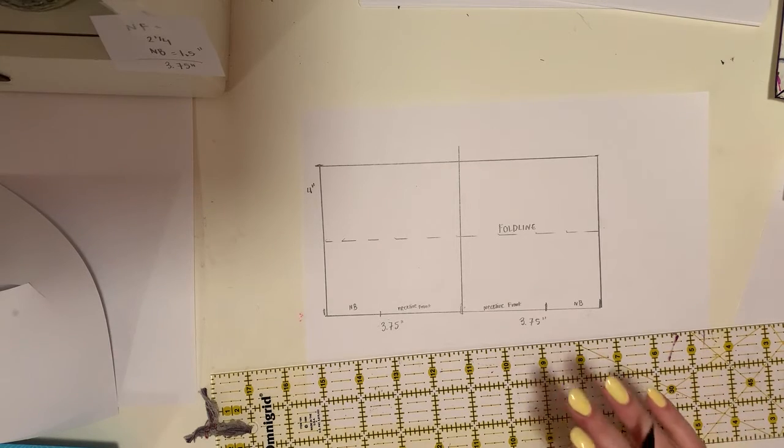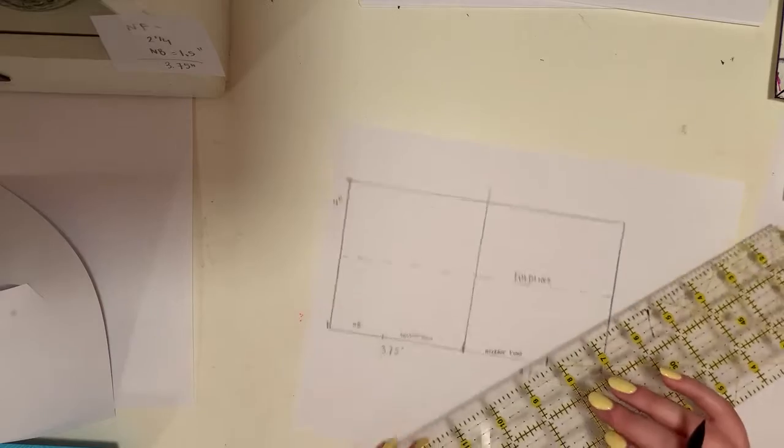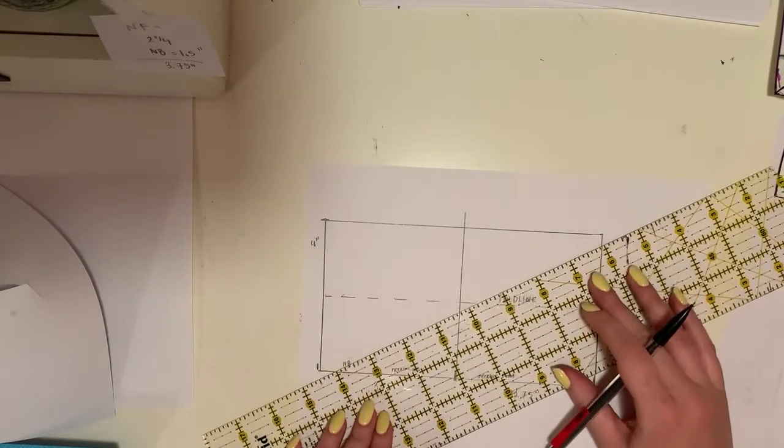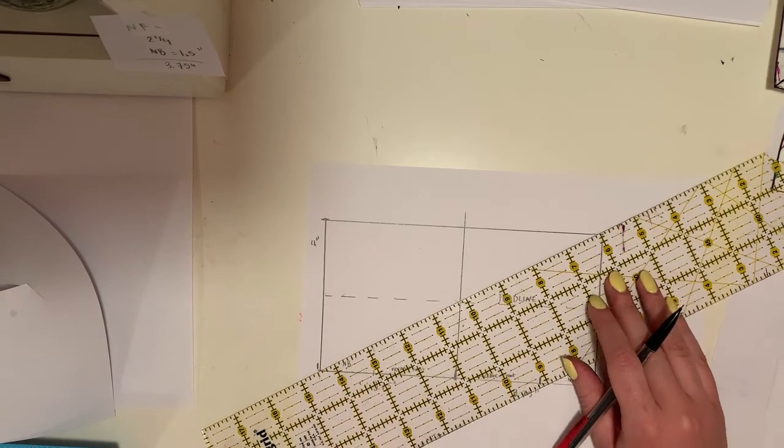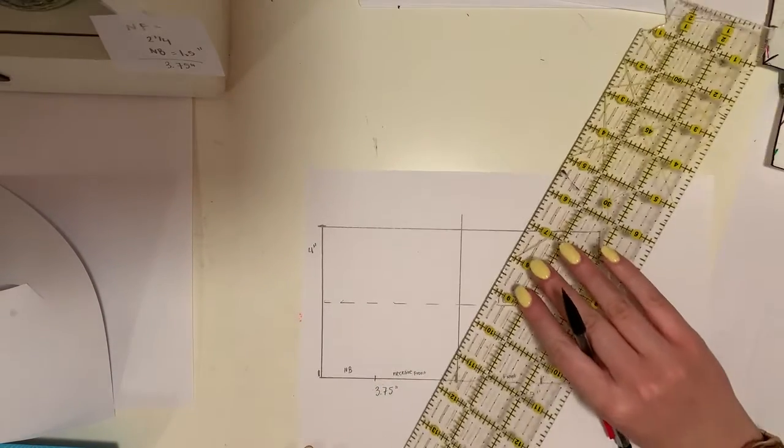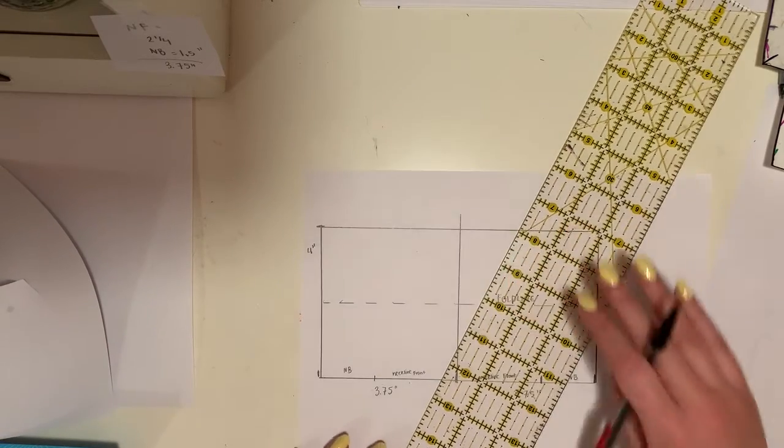Next, all that is left for this is to label. So I am going to line up my ruler because this one, if it's biased, that means we have to do our grain lines accordingly, which is diagonal.